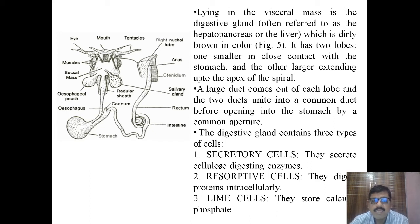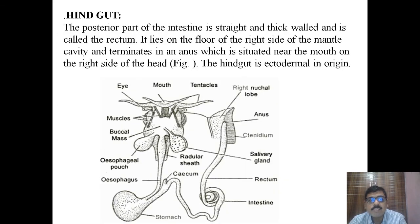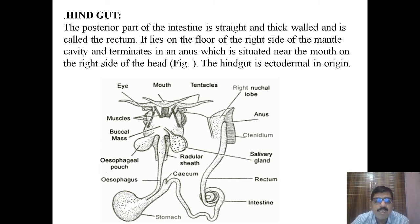The three types of cells in the digestive gland are secretory cells, resorptive cells, and lime cells. The secretory cells secrete cellulose-digesting enzymes. The resorptive cells digest protein intracellularly, and the lime cells store calcium phosphate. The posterior part of the intestine is the hindgut; it is straight, thick-walled, and called the rectum.